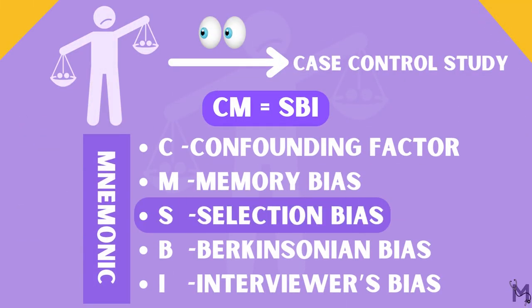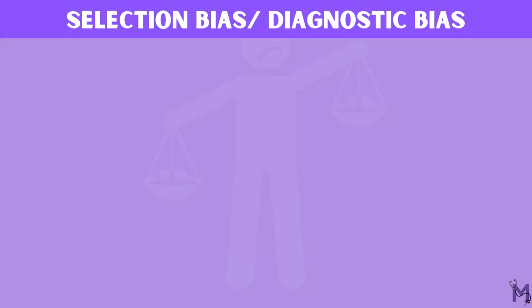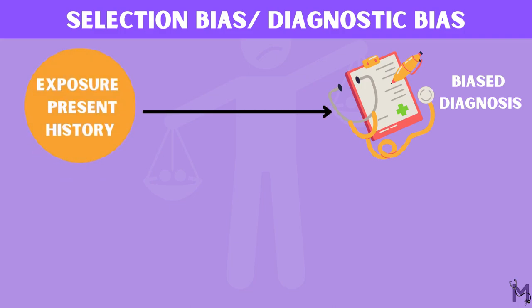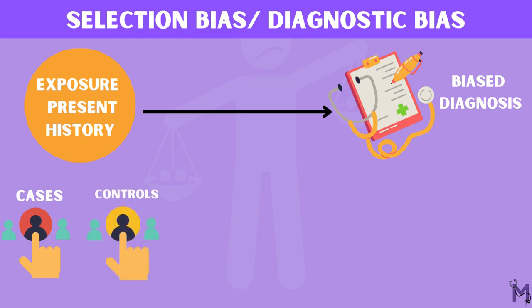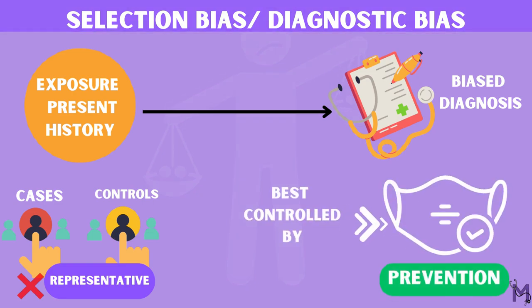The S stands for selection bias, also known as diagnostic bias, wherein the diagnosis itself is more likely to be biased if the exposure is present in history. The cases and the controls may not be representative of cases and controls in the general population. This bias can be best controlled by prevention.